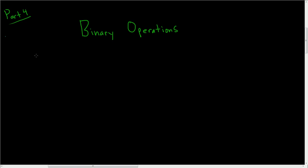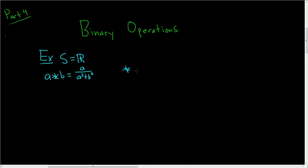Let's keep talking about binary operations. For example, we'll set S equal to the set of real numbers, and we're going to define star as follows: a star b is equal to a divided by a squared plus b squared. The question is, does star define a binary operation on the set of real numbers? And the answer is no — star is not a binary operation on the set of real numbers.